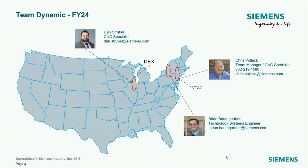Our team is new and growing but has a lot of experience. Right now it consists of three people: myself, sitting in Illinois at the DEX or TAC — Technical Application Center — and then Chris, who sits in the VTAC in New York, with a virtual TAC with machines for virtual webinars and demonstrations. And then Brian Bobgarner, also in New York, recently added from an engineering standpoint, giving us the commissioning side.